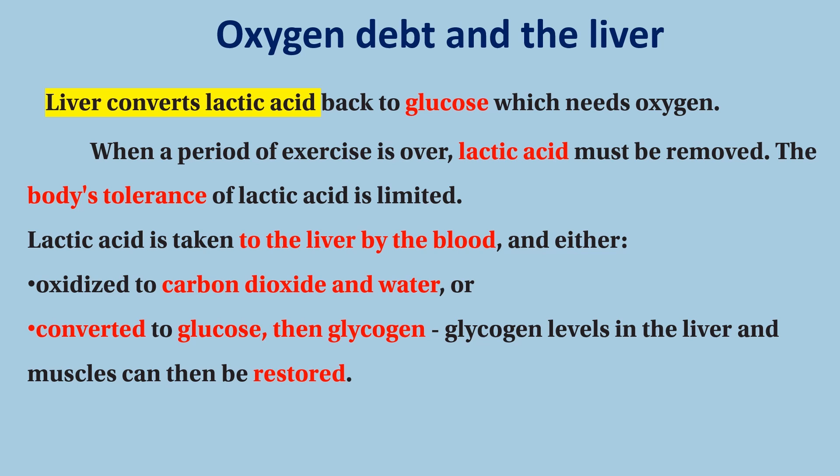Glycogen in the liver and the muscle can then be restored so that glucose and glycogen will be available in the blood and can be used by the muscle.